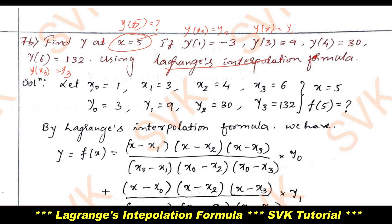Consider the given data and note down the values x0, x1, x2, x3 and correspondingly y0, y1, y2, y3. I will make one change here: in place of the given y0, I am taking it as plus 3. Consider this as plus 3 and solve. You can go with minus 3 also and solve, then verify your answer.